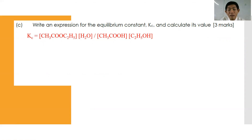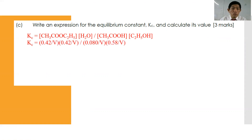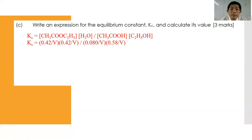The moles of ethanol remaining = 1.00 − 0.42 = 0.58 mol. Kc = [CH₃COOC₂H₅][H₂O] / [CH₃COOH][C₂H₅OH]. Note that water must be included in the equilibrium expression here because it is a product formed, not a solvent. So Kc = (0.42/V × 0.42/V) / (0.08/V × 0.58/V). The volume V cancels out, giving Kc = 3.80 (to three significant figures).